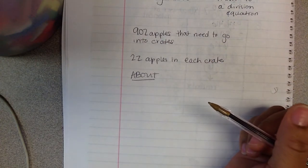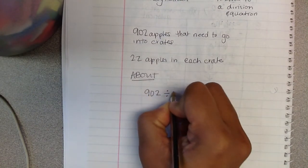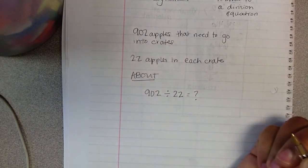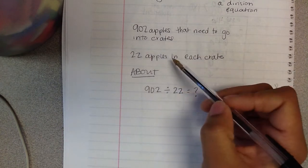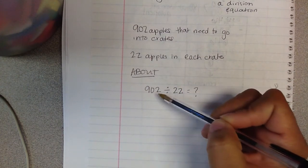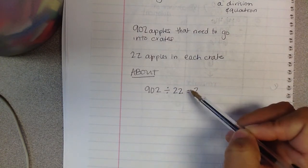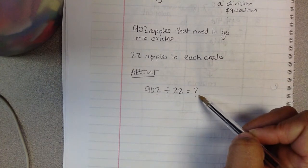So what I'm doing is I'm taking 902 apples and I'm dividing it into groups of 22. And I want to figure out how many groups I'll get. 902 apples and there's 22 going in each crate. So I'll have a total of 902. There's my dividend. And I want to put them into groups of 22. There's my divisor. And my quotient over here, my answer, will tell me how many total groups I'll end up with.